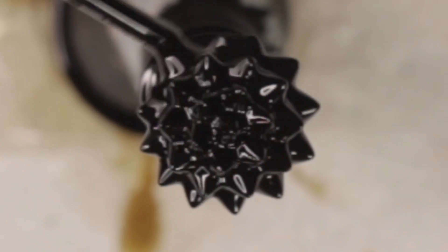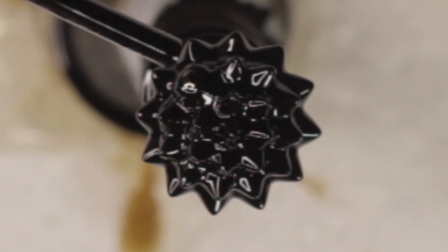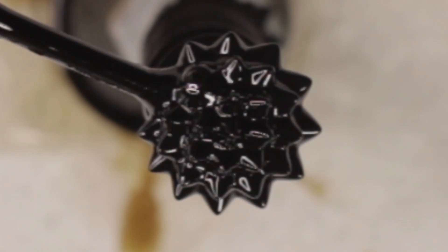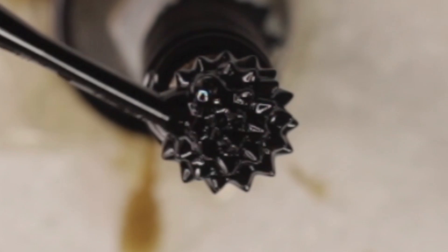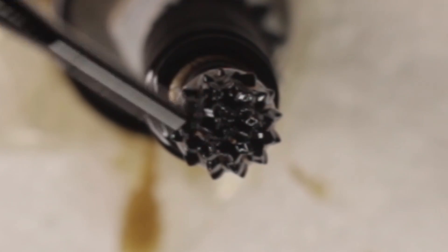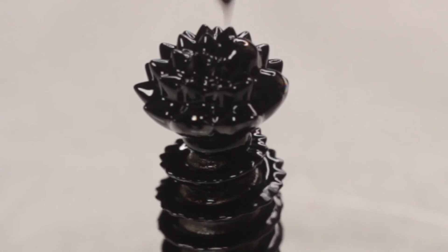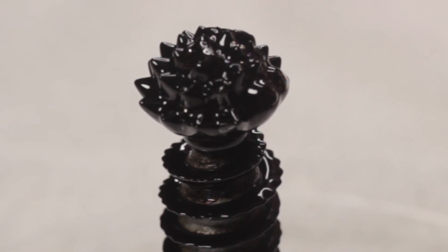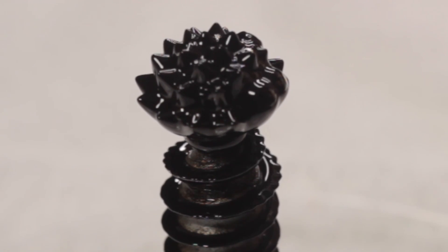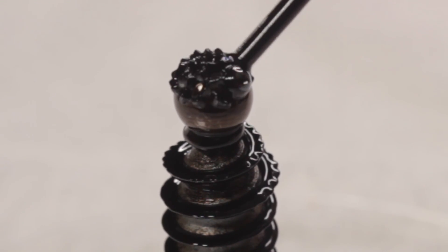Ferrofluids usually do not retain magnetization in the absence of an externally applied magnetic field, and thus are classified as superparamagnets rather than ferromagnets. In other words, ferrofluids need peer pressure or in-person encouragement in order to behave like a magnet.